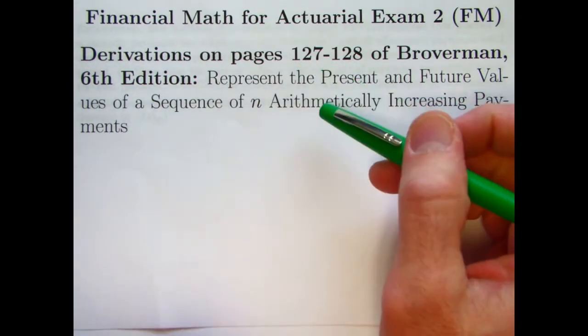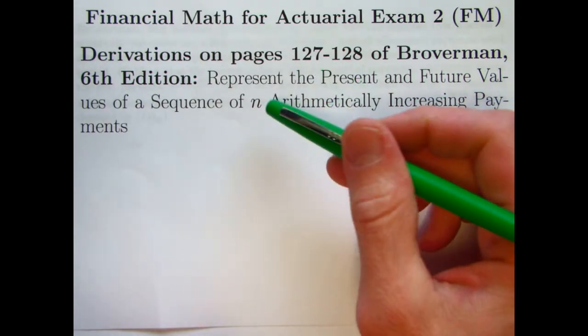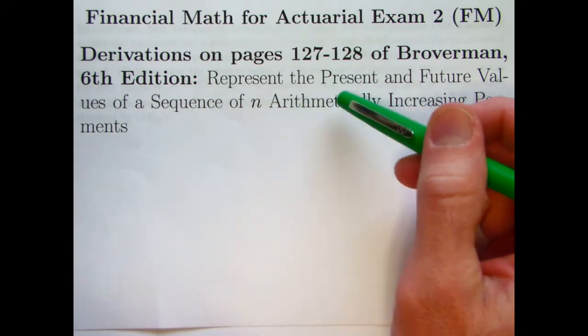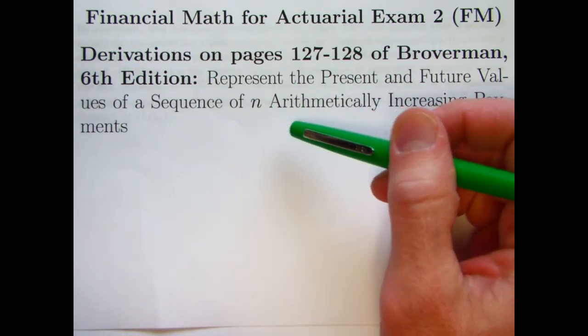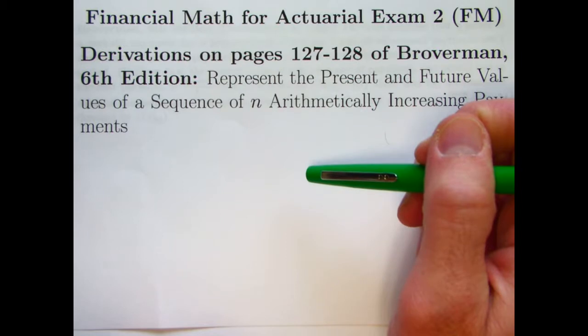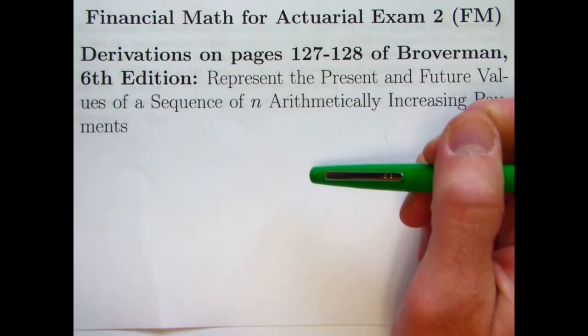From pages 127 and 128 of the 6th edition of Broverman, we'll be representing symbolically the present and future values of a sequence of n arithmetically increasing payments. In the last video, they were geometrically increasing payments, where we kept multiplying the previous payment by the same amount to get the next payment. This time we keep adding the same amount to the previous payment to get the next payment.